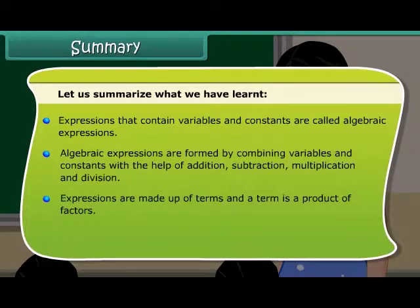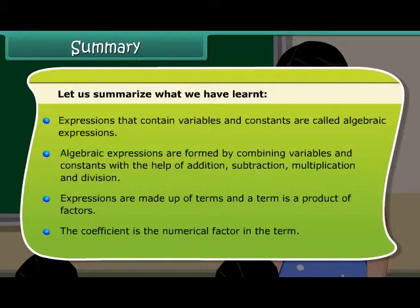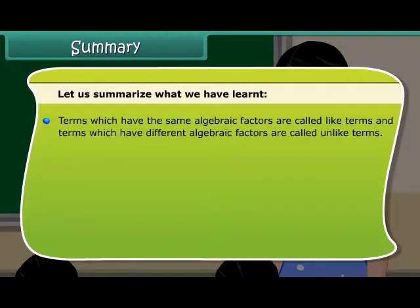Expressions are made up of terms, and a term is a product of factors. The coefficient is the numerical factor in the term. Terms which have the same algebraic factors are called like terms, and terms which have different algebraic factors are called unlike terms.